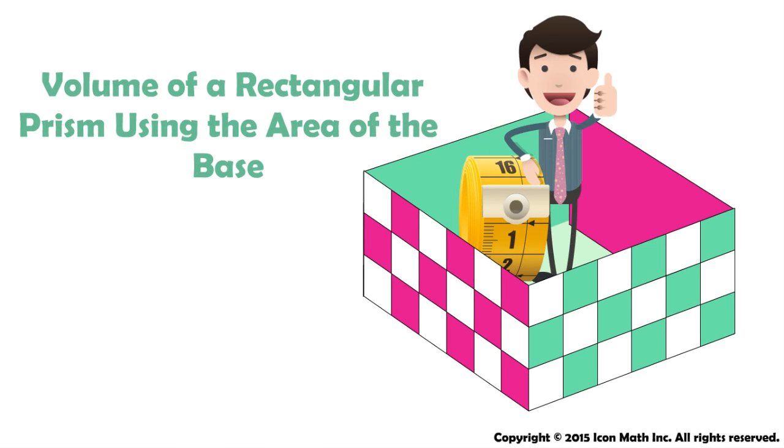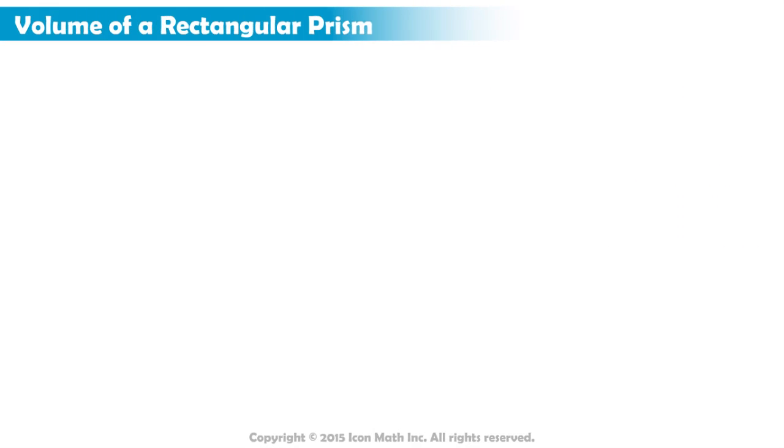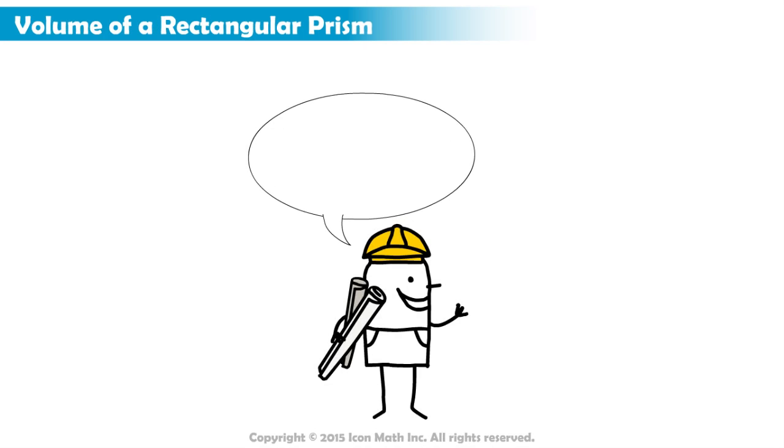Volume of a Rectangular Prism Using the Area of the Base. You've learned how to calculate the volume of a rectangular prism using the formula volume equals length times width times height.